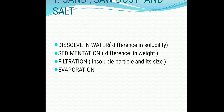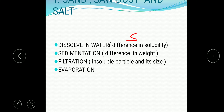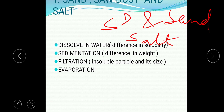For the first example — separation of sand, sawdust, and salt — we will first dissolve this mixture in water. The basic principle here is the difference in solubility. The salt will get solubilized, whereas the sawdust and sand will not get solubilized.